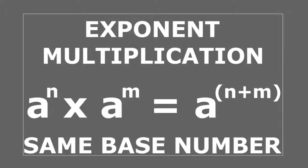In this video we are going to make an example on the multiplication of numbers with the same base number and different exponents. When you have that, you just keep the same base number and add the exponents.